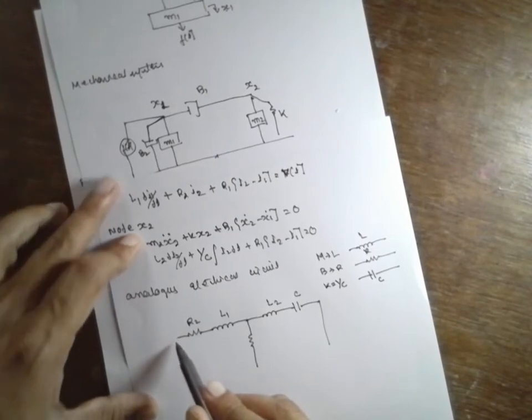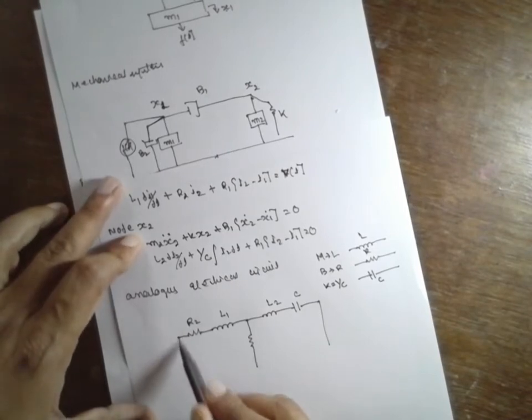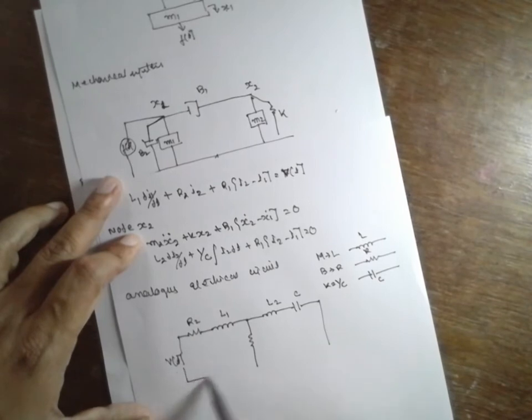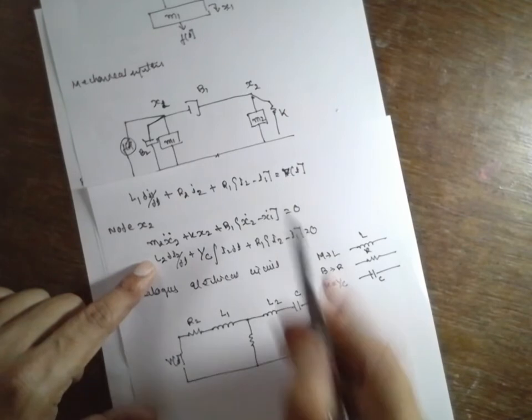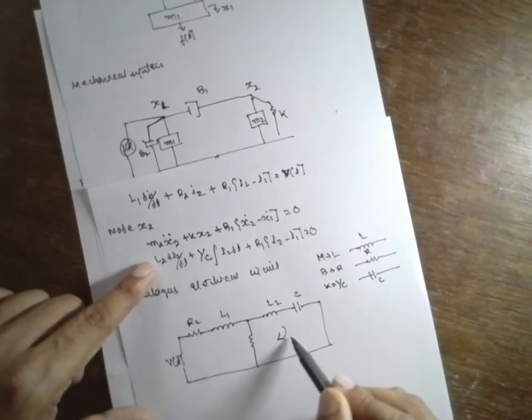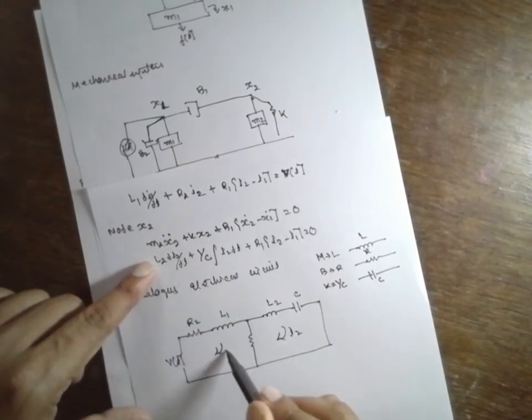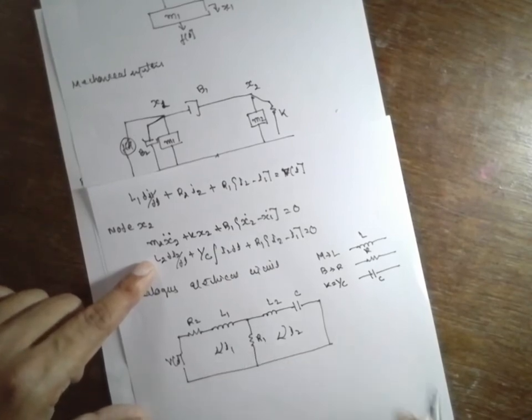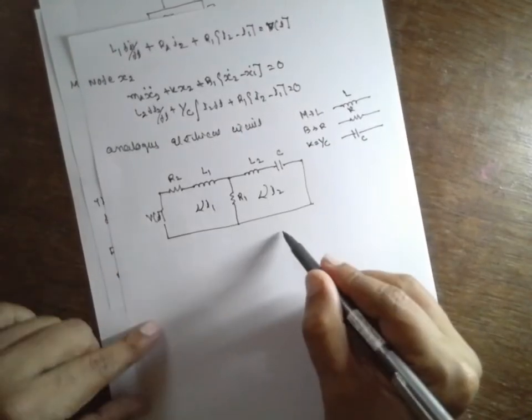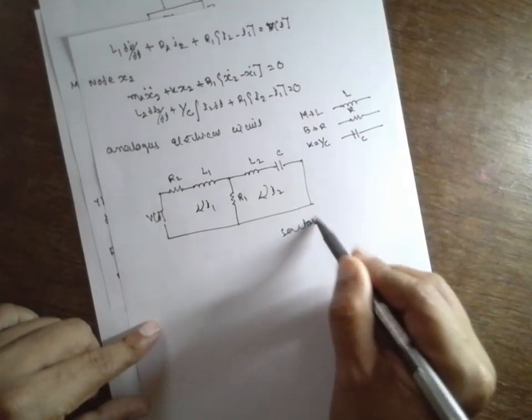Here it becomes the voltage V of t. Now there are two currents I1 and I2. It here will be R1. I am Sandhush Gaidinkar. Thank you very much.